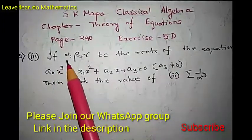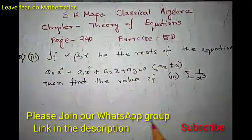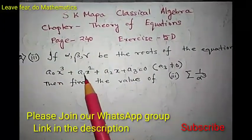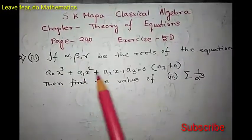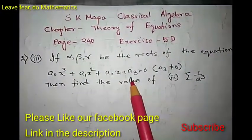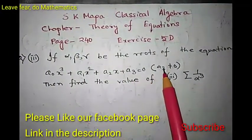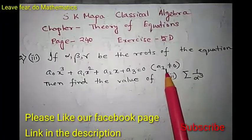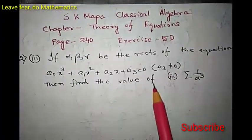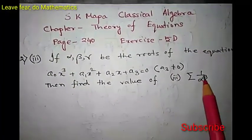The problem says: if alpha, beta, gamma be the roots of the equation a₀x³ + a₁x² + a₂x + a₃ = 0, where a₃ ≠ 0, then find the value of the sum of 1 over alpha cubed.